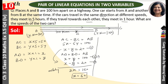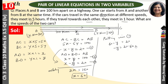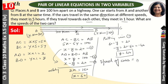Putting x equals 60 into equation 1: 60 minus y equals 20, so minus y equals 20 minus 60, which gives y equals 40. Therefore, the speed of the two cars is 60 km per hour and 40 km per hour.